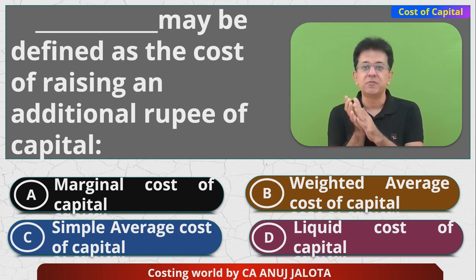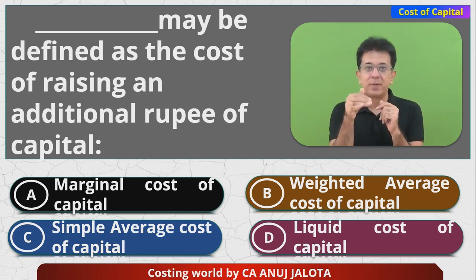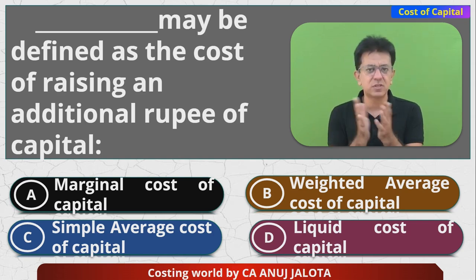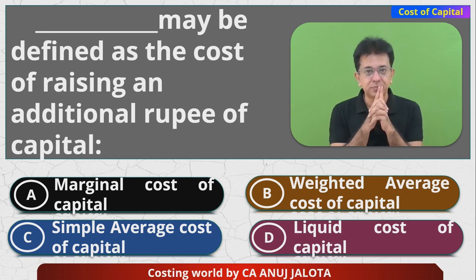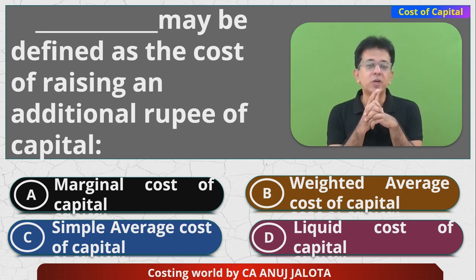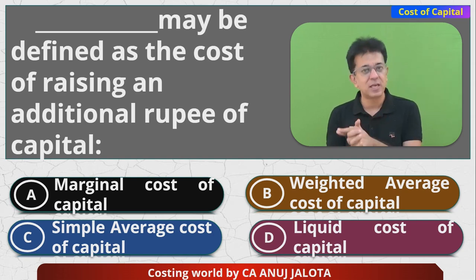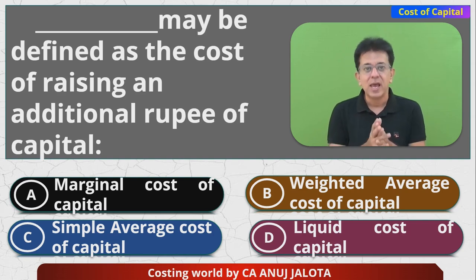Option B is Weighted Average Cost of Capital. You might have in your capital structure: debt, equity, preference, and reserves and surplus. The cost of debt is called kd, cost of equity is ke, cost of preference is kp, and cost of reserves and surplus is kr. We then try to find out their weighted average.